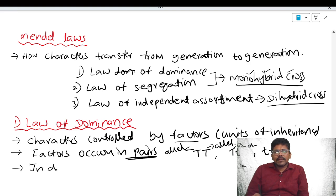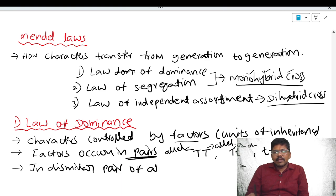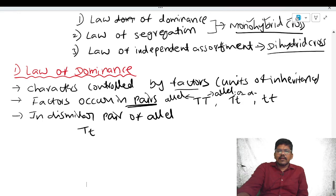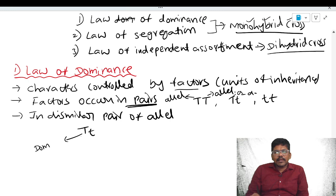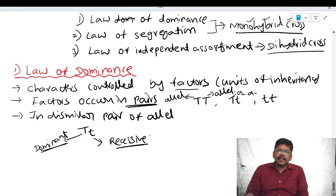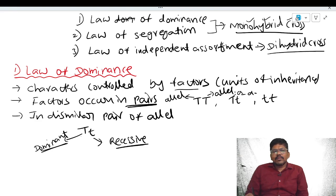If the alleles are different — in a dissimilar pair of alleles — one allele is dominant and another allele is recessive. The dominant allele will express its phenotypic character even in the presence of an alternate allele. The recessive allele will express its phenotypic character only in the homozygous condition.